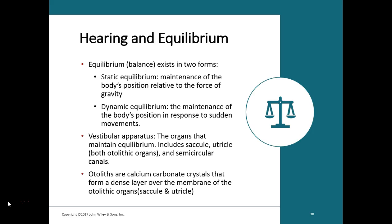There are two forms of equilibrium in the human body. Static equilibrium helps us maintain posture or balance when the body is not moving — for example, detecting if your head is upside down or sensing movement of a car around you while you are stationary. Dynamic equilibrium interprets balance when the body or head is moving, helping you stay upright when you turn your head or walk.